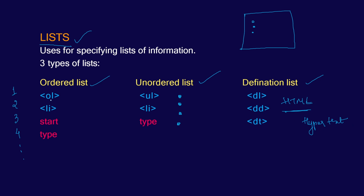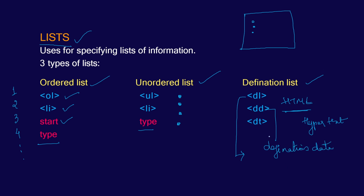For the ordered list you have two tags — that is OL (ordered list) and LI (list items) — and two attributes: the start attribute and the type attribute. In the unordered list you don't have a start attribute since there is no ordering; all you have are disk, square, or circle types, so you just have the type attribute. For the definition list you have DL, which stands for definition list; DD, which stands for definition data; and DT, which stands for definition term.